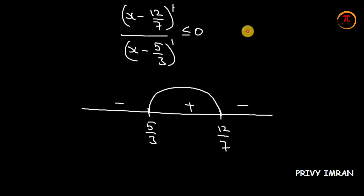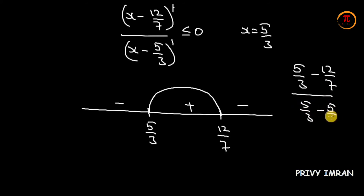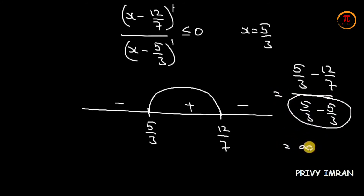I need to consider only the positive sign region. Now let me check x equals 5/3: substituting gives (5/3 minus 12/7) divided by (5/3 minus 5/3). The denominator becomes 0, so it is undefined. Therefore x is not equal to 5/3.